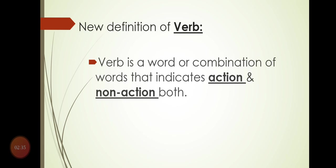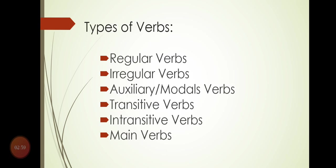So here is the new definition of verb: a verb is a word or combination of words that indicates action and non-action both. Don't forget this point — action and non-action both. Action words include play, drink, eat, running, playing. Non-action words include 'is,' 'was,' 'were,' 'have,' 'had' — these are the linking verbs.